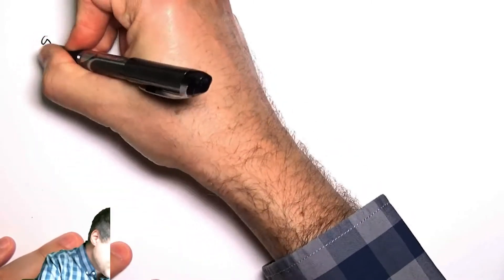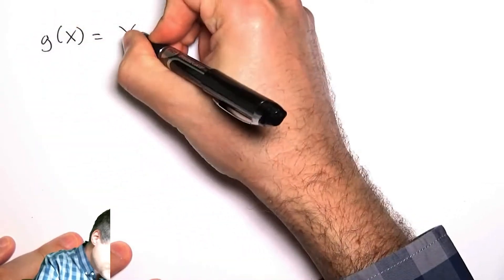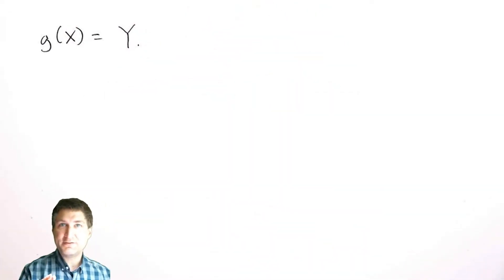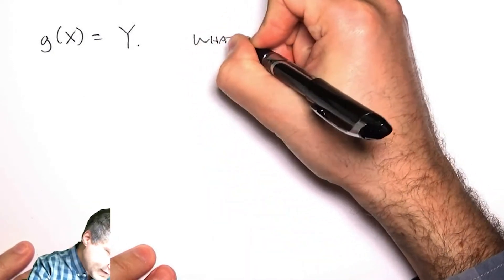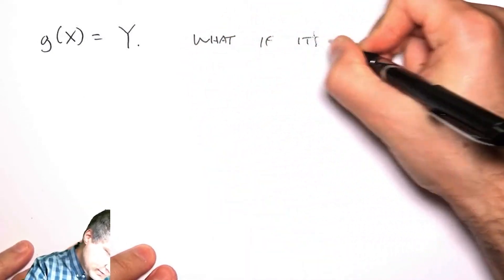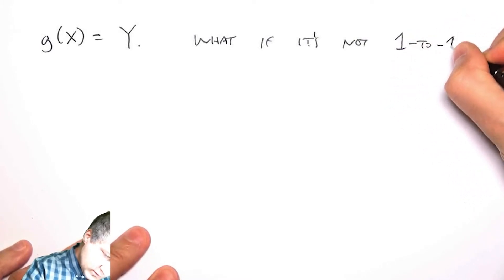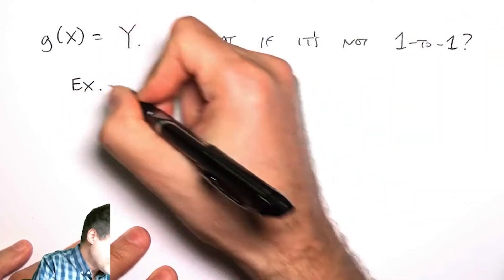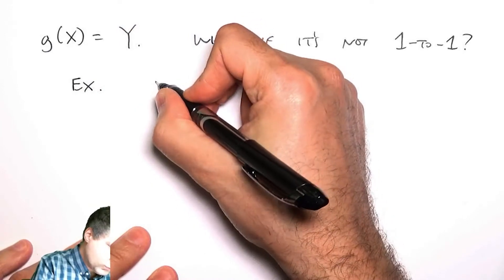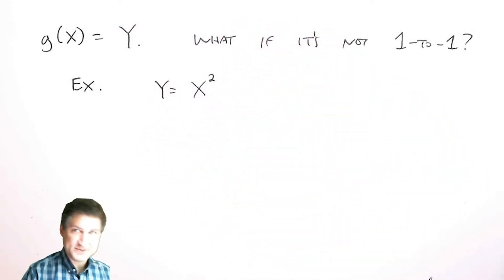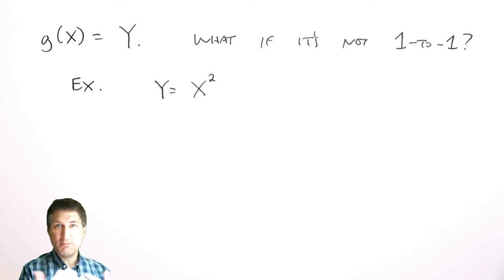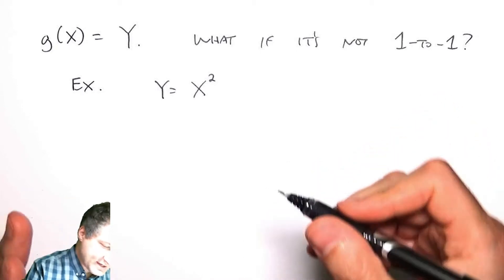Last time we talked about functions of a random variable g(x), which gives a new random variable y, and how to find the PDF and CDF of y when the expression is one-to-one. Now, what if it's not one-to-one? For example, if y equals x squared, then x = -2 and x = +2 both map to y = 4, and that has an impact on how the PDF and CDF look.